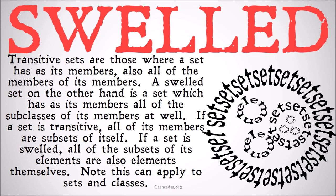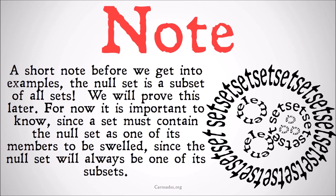This is a bit complicated, so we'll look at examples in a moment, but first a quick note: the null set is a subset of all sets. We may have mentioned this already and we're going to prove it later, but it's important here because we're going to be finding all of the subsets of all of the members of a particular set. To do that, all of them must have the null set. So in order to be swelled, you must contain the null set, because any of your members has the null set as a subset, and to be swelled you must contain all the subsets of all of your members.